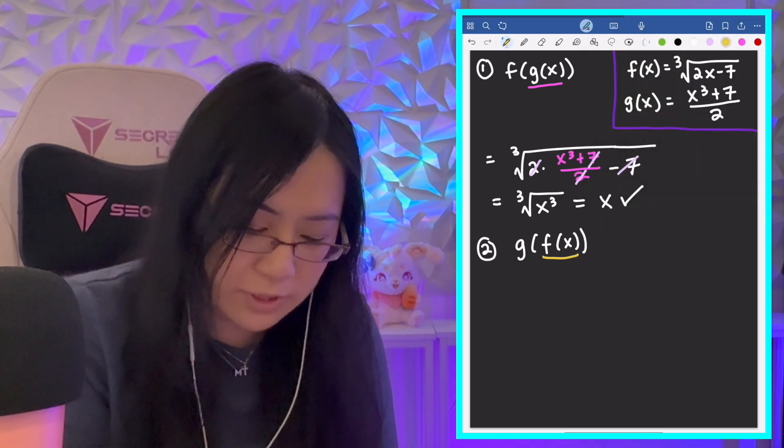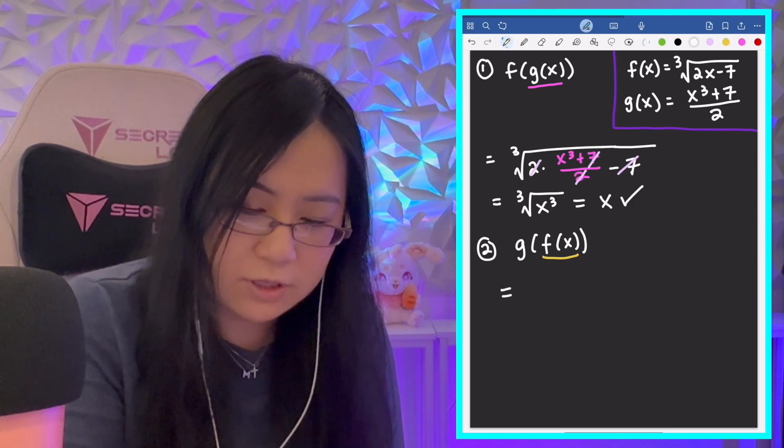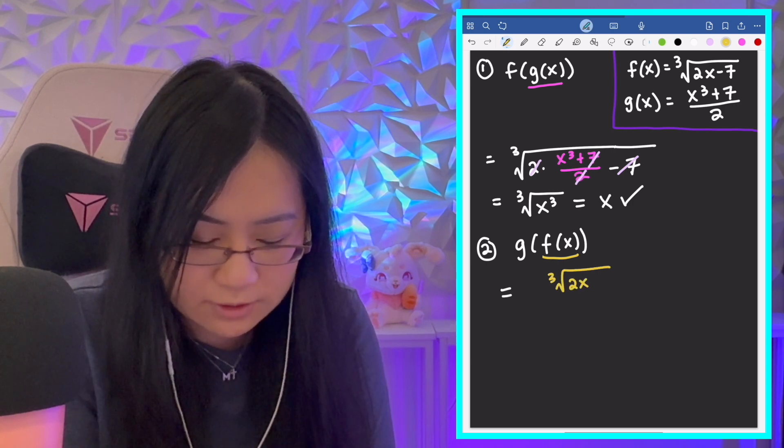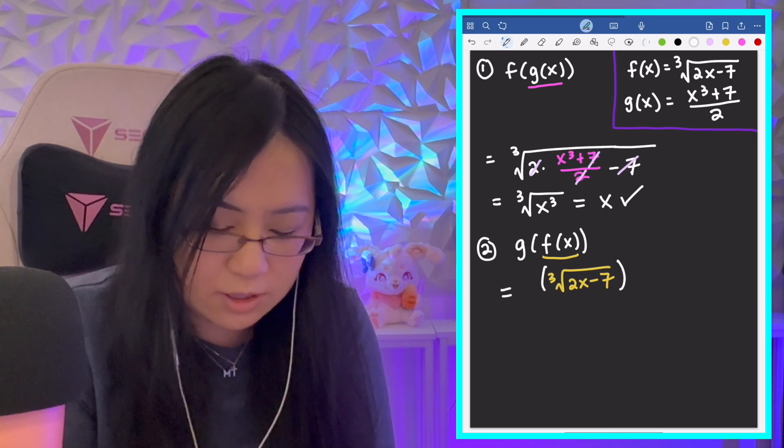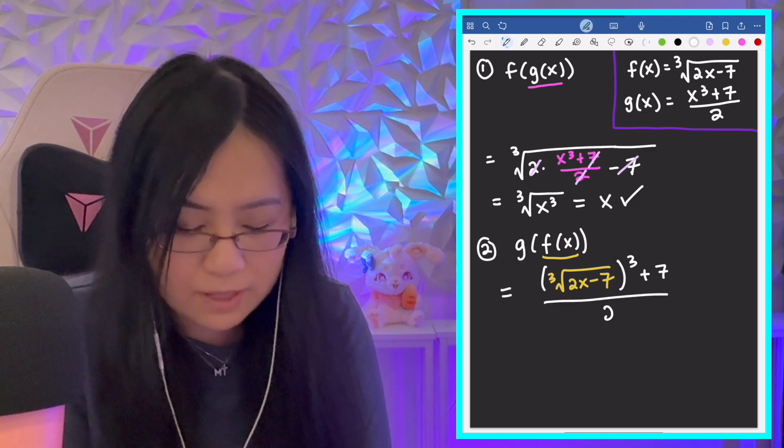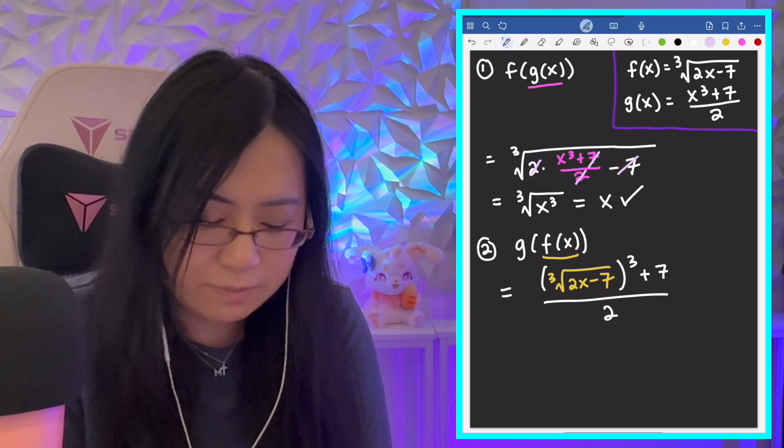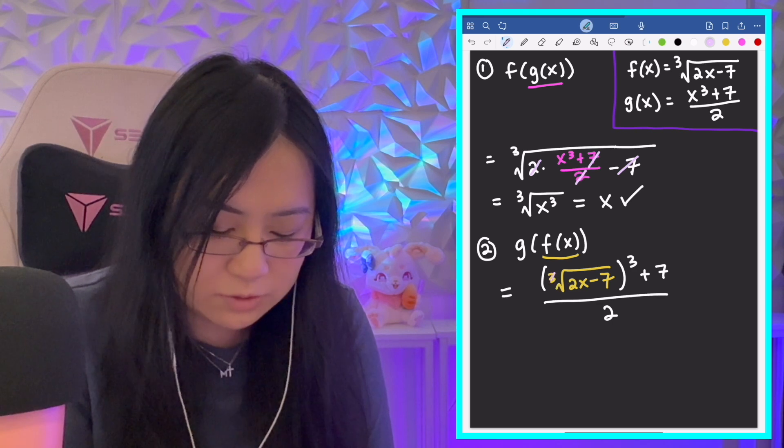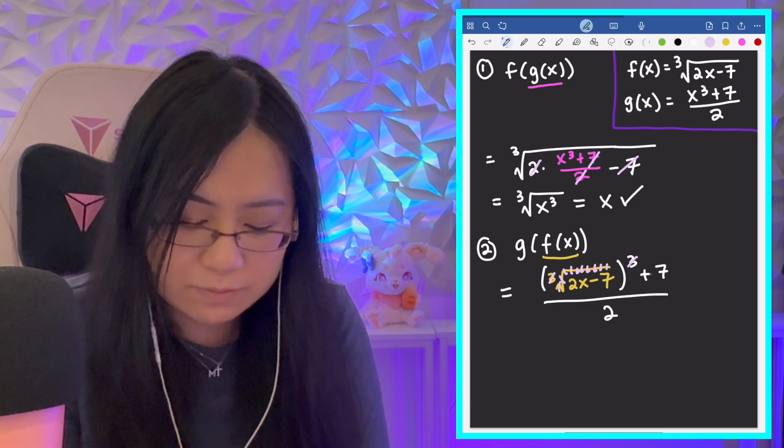So, this equals, and then you have the cube root of 2x minus 7, and you cube this whole thing plus 7 over 2. So you just do this step by step, and now we just simplify. If you want to write out more steps here, you definitely can, but the general idea is that this cubed cancels this cube root. No problems here. You have 2x minus 7 plus 7.